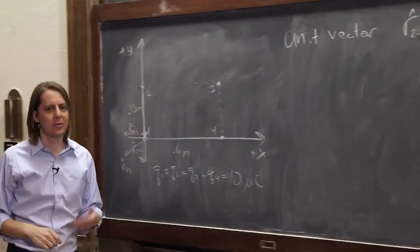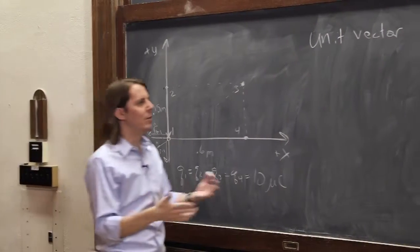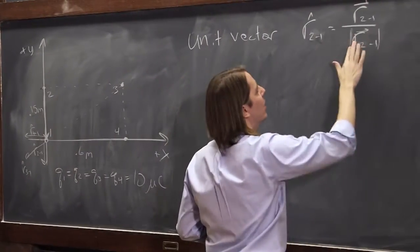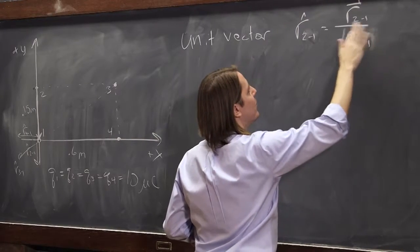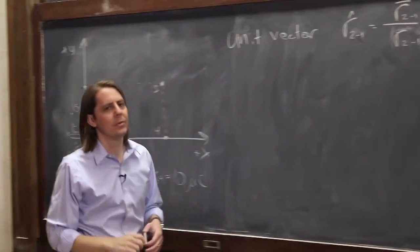Go ahead and call it the vector r 2,1, and put the bars around it. Or what we've been kind of doing is when we see nothing on here, when it's just empty on top, we know that's a magnitude. That's the displacement in this case.